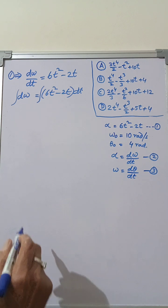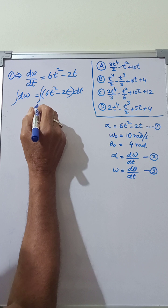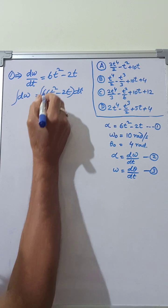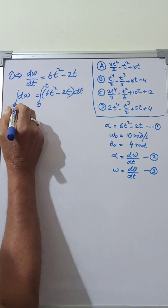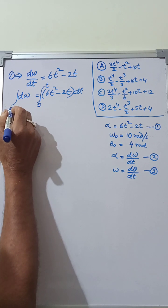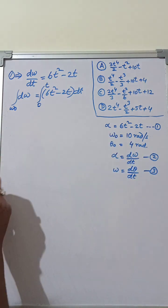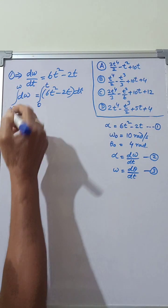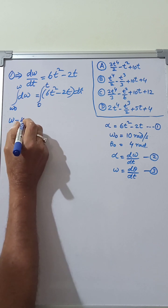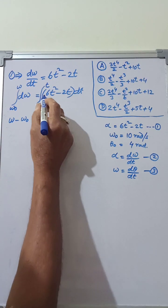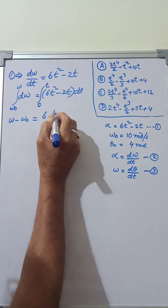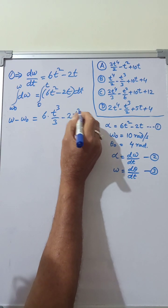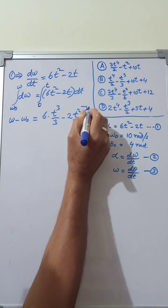We integrate both sides. Time changes from 0 to t, and correspondingly angular velocity changes from omega₀ to omega. When t equals 0, angular velocity is omega₀ equal to 10 radians per second. On integration: omega minus omega₀ equals 6·(t³/3) minus 2·(t²/2), evaluated between limits 0 to t.